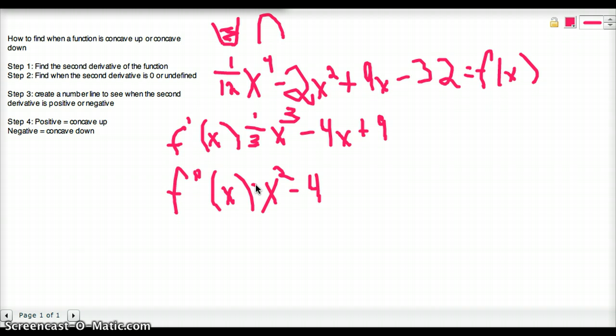Now we need to find when x squared minus 4 is 0 or undefined. And hopefully you know how to do that. You take x squared, and you see when it's equal to a positive 4. And so obviously, x equals plus minus 2.